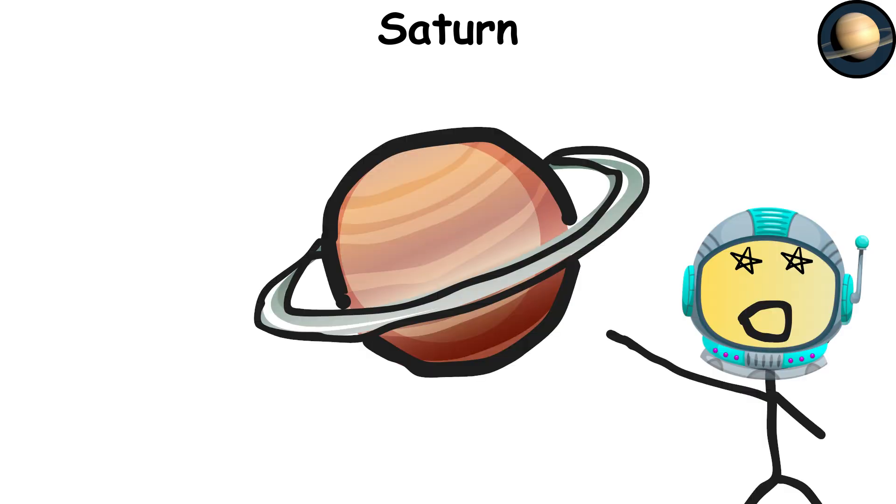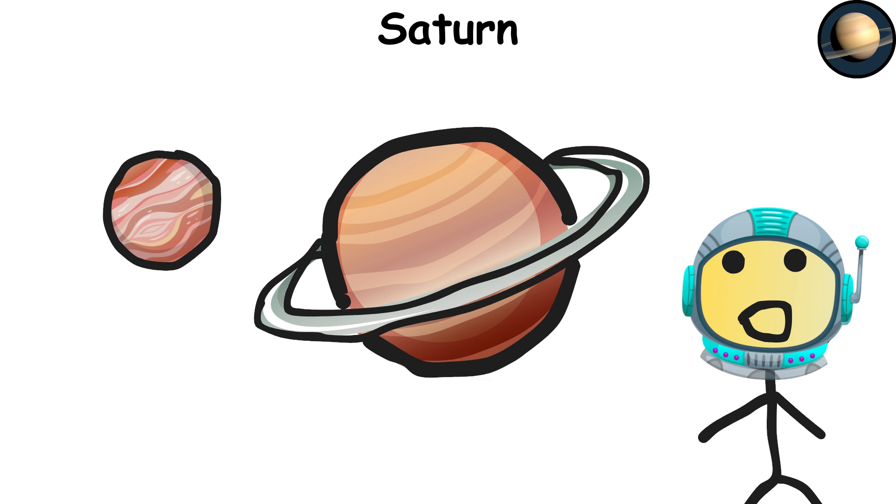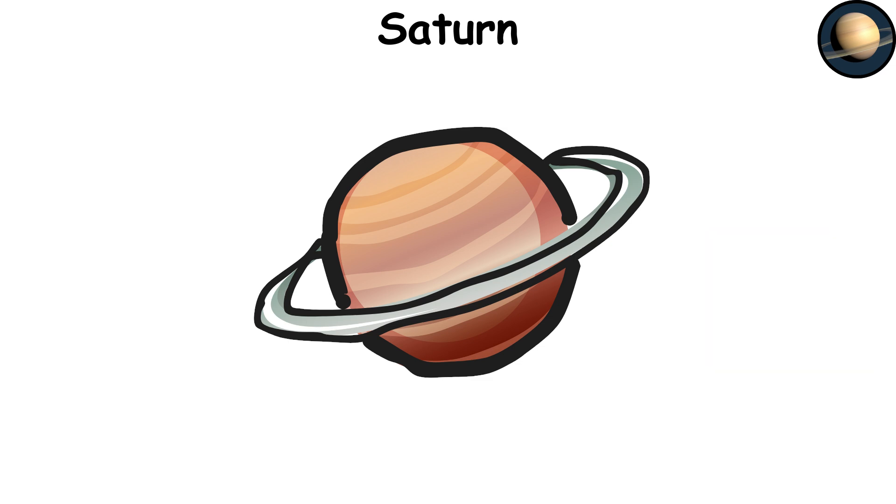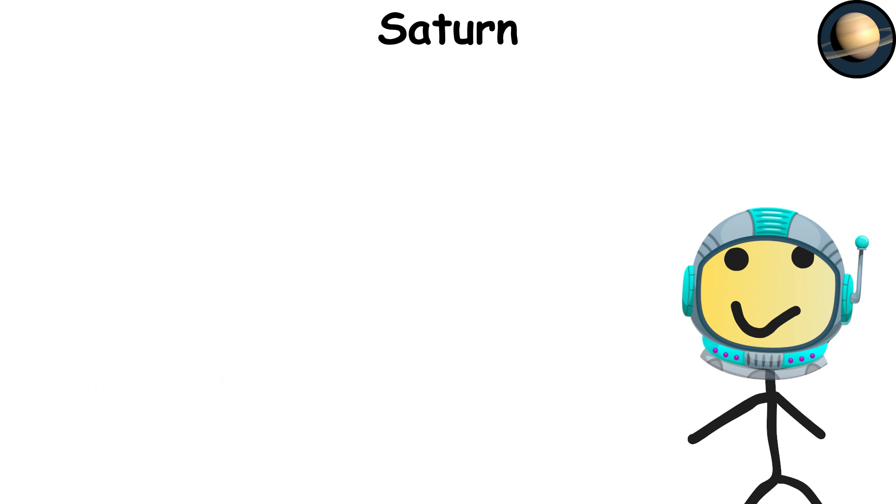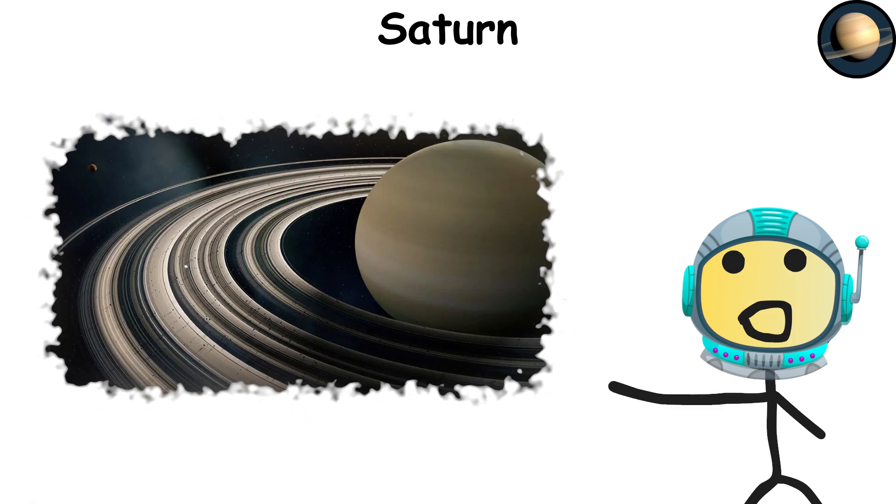Saturn, everyone's favorite fashion icon with those fabulous rings. Saturn's made mostly of gas, like its buddy Jupiter, so you wouldn't have anywhere to stand. But who needs solid ground when you've got rings made of ice and rock? It's like the universe's biggest jewelry collection. These rings span over 175,000 miles, 282,000 kilometers, but are surprisingly thin, only about 30 feet thick in some places.